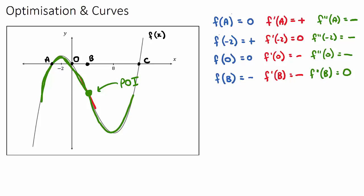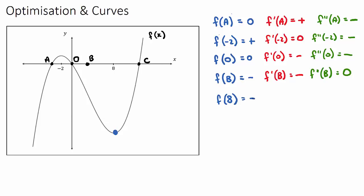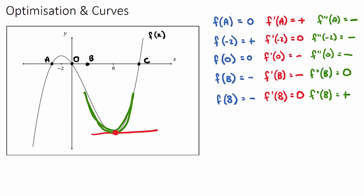f(8): when x is 8, the y value will be negative. Now the slope, f'(8) — it is a turning point, a minimum, so the slope equals 0. And f''(8) is our concavity. This point is part of what I call the happy face, so it is going to have a positive concavity.